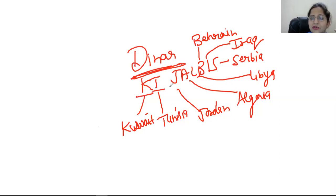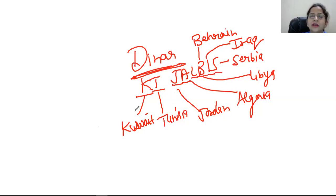K from Kuwait, T from Tunisia, J from Jordan, A from Syria, Libya, B from Bahrain, I from Iraq, S from Serbia — one time you have to study, but you will have 100% learning. Eight countries, one-time learning.